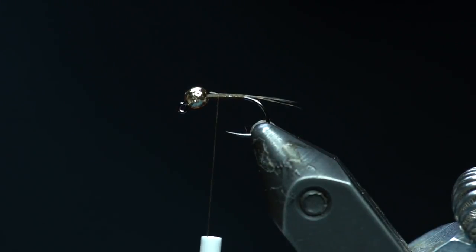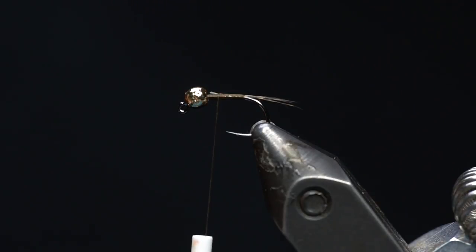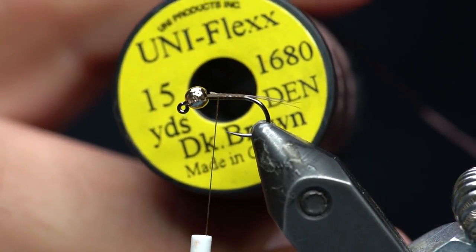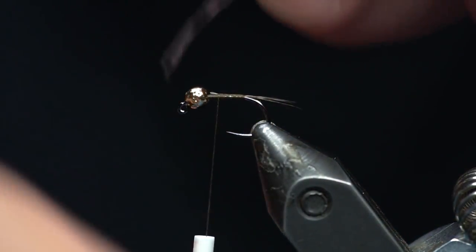And then for the body material, I like to tie this a lot in purple. But for now, I'm going to show you more of a natural Betis color that I've been having some success with lately. So I'm going to use the dark brown UniFlex. It's a really nice material.